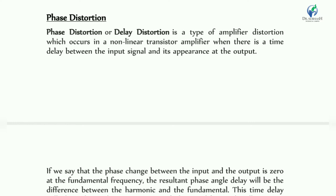Phase distortion can occur in many ways. For example, if a signal starting from zero degrees gets delayed at the output — sometimes the sound comes before the picture, or sometimes the sound is delayed behind the picture in a dubbed movie or serial — that delay is called phase distortion or delay distortion.